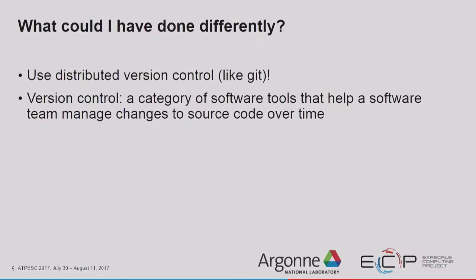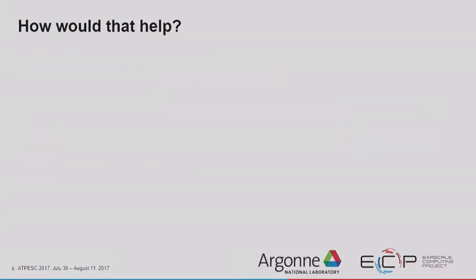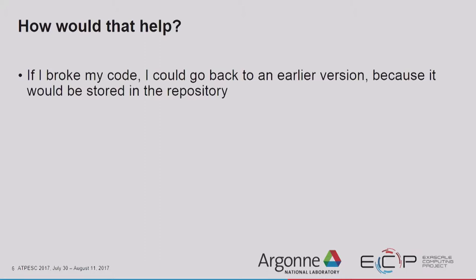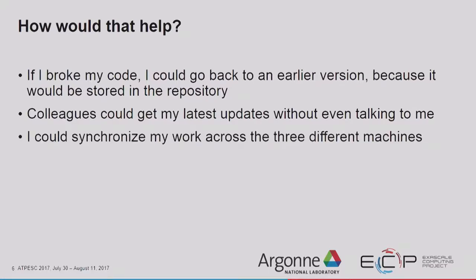Version control is a category of software tools that help a software team manage changes to source code over time. You keep track of every modification in a special database called a repository. If I had broken my code, I could easily go back to an earlier version stored in the repository. In grad school I wrote Fortran, and one day I decided all the ones should be zeros because I forgot Fortran is one-based indexing. I lost a bunch of work with no way back. Git would have helped. My colleagues would be able to get the latest updates without even talking to me — I would not be an impediment to their workflow.